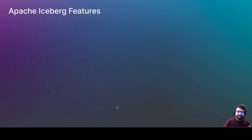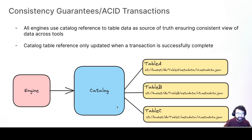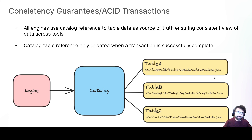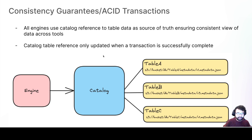Apache Iceberg has several key features. First, ACID guarantees — the way it achieves this is through the catalog, which maintains a listing of each table and where the current metadata JSON file is. That pointer only gets updated after the transaction is complete. So either the transaction happens or it doesn't — those atomicity guarantees ensure consistency, which was very difficult to achieve in the data lake previously.